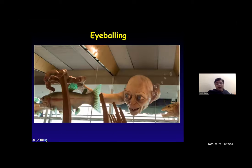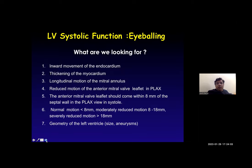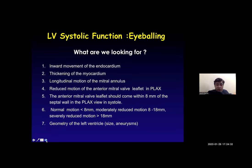When eyeballing, we are looking for inward movement of the endocardium, thickening of the myocardium, and motion of the mitral annulus. If there is reduced motion of the anterior mitral valve leaflet in the parasternal long axis view: the anterior mitral valve leaflet should ideally come within 8 mm of the septal valve in the parasternal view during systole. Normal motion is less than 8 mm, moderately reduced motion is 8 to 18 mm, and severely reduced motion is greater than 18 mm. We can also look at the size of the left ventricle and any aneurysms.